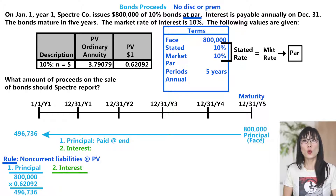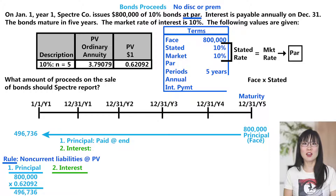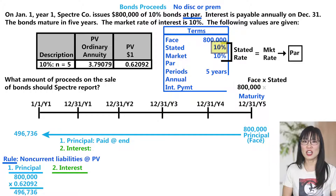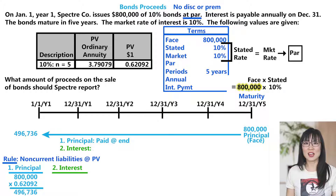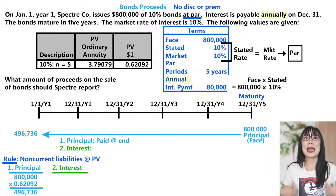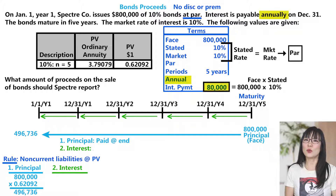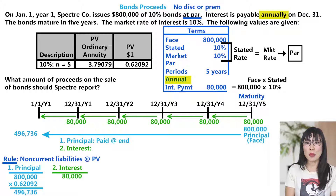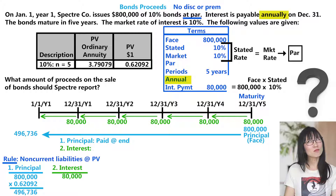The second cash stream is for interest payments. We calculate the interest payment as face times the stated rate — note this is the only time we use the stated rate. Face is just another way to say principal: $800,000. The stated rate is 10%. $800,000 × 10% = $80,000. The prompt says that interest is paid annually on December 31st, so we pay $80,000 at the end of each year.